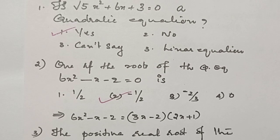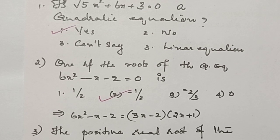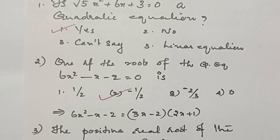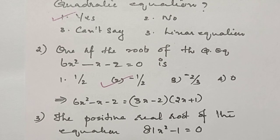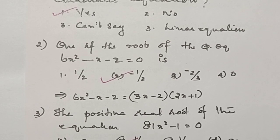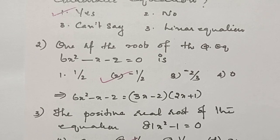If one of the roots of the quadratic equation 6x squared minus x minus 2 is asked, we can factorize it. Then we will get 6x squared minus x minus 2 is equal to 3x minus 2 into 2x plus 1. Therefore, the answer is minus 1 by 2.